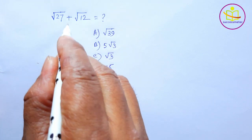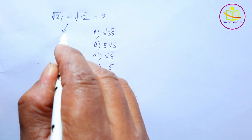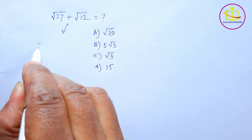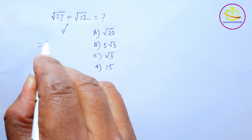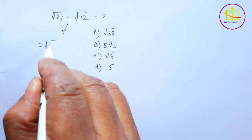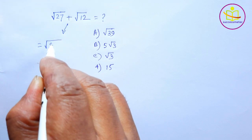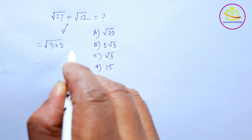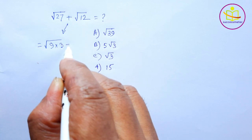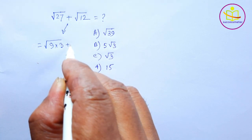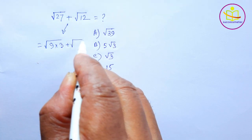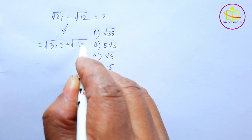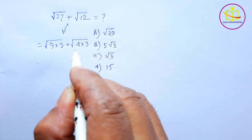The left hand side is equal to square root of 9 into 3 plus square root of 4 into 3.